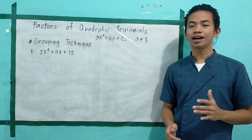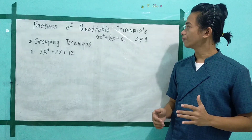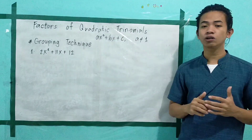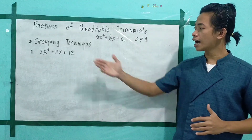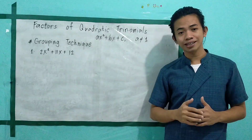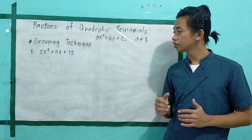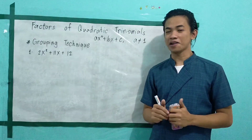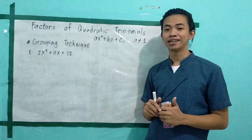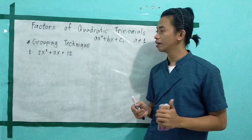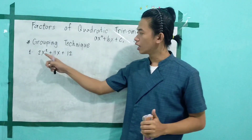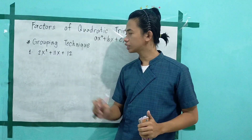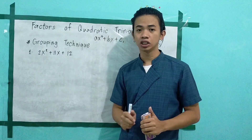Another technique in factoring a quadratic trinomial where a is not equal to 1 is the grouping technique. Now let's proceed to problem number 1. In problem number 1, we have 2x squared plus 11x plus 12.